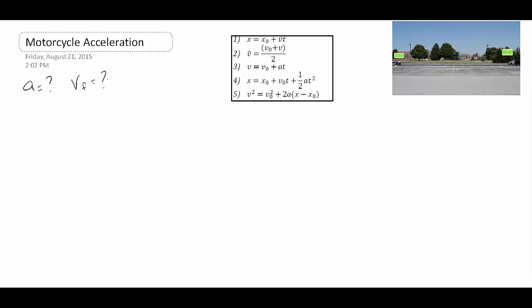Let's start with the acceleration first. These problems are pretty straightforward — we figure out what we have and then use those values to solve the problem. There is one thing we have to do before we start: we always want to define where x equals zero is. I'm going to define x equals zero at the point that I began, so that is my origin of the problem.